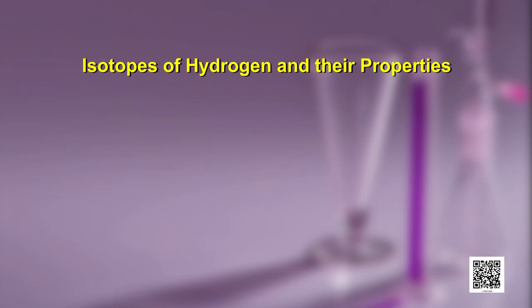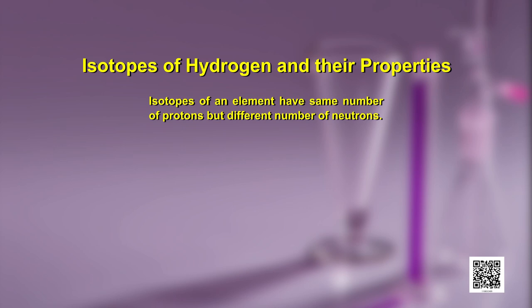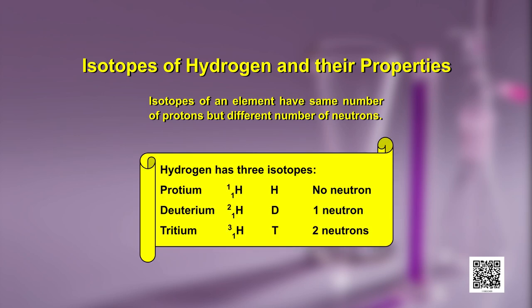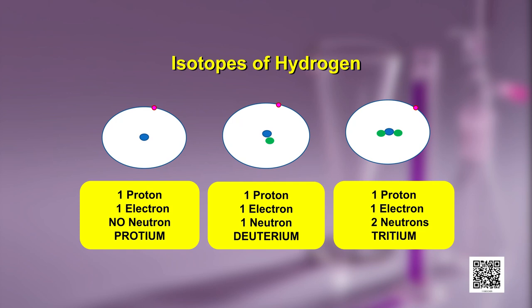At this stage it is important to know about various isotopes of hydrogen and their properties. What is an isotope? Isotopes of an element have the same number of protons but different number of neutrons. Hydrogen has three isotopes namely protium, deuterium, and tritium. Protium, which we are mostly familiar with, has only one electron and one proton but no neutron.